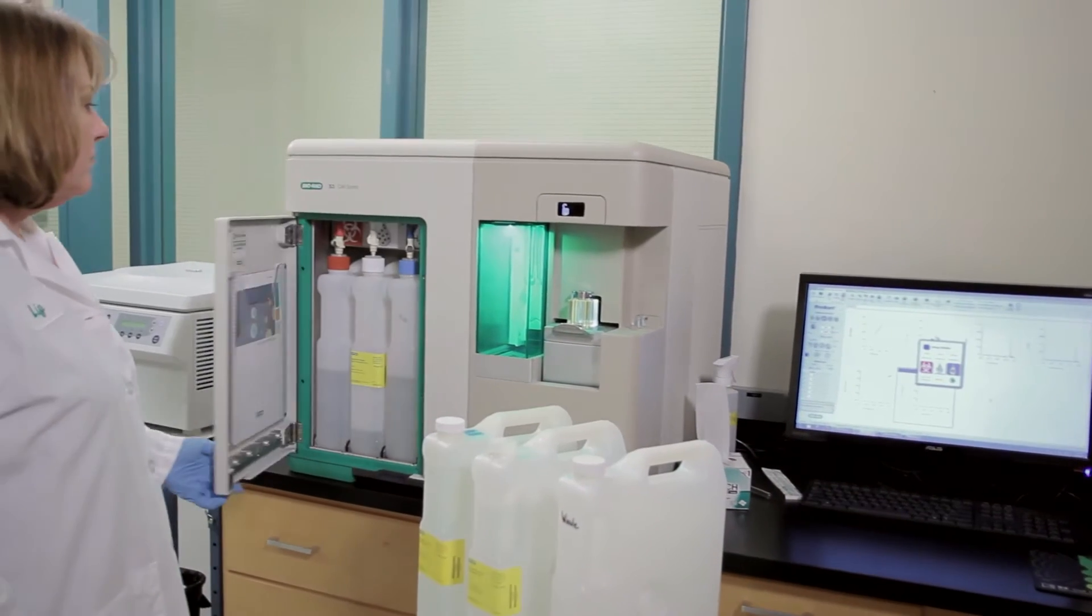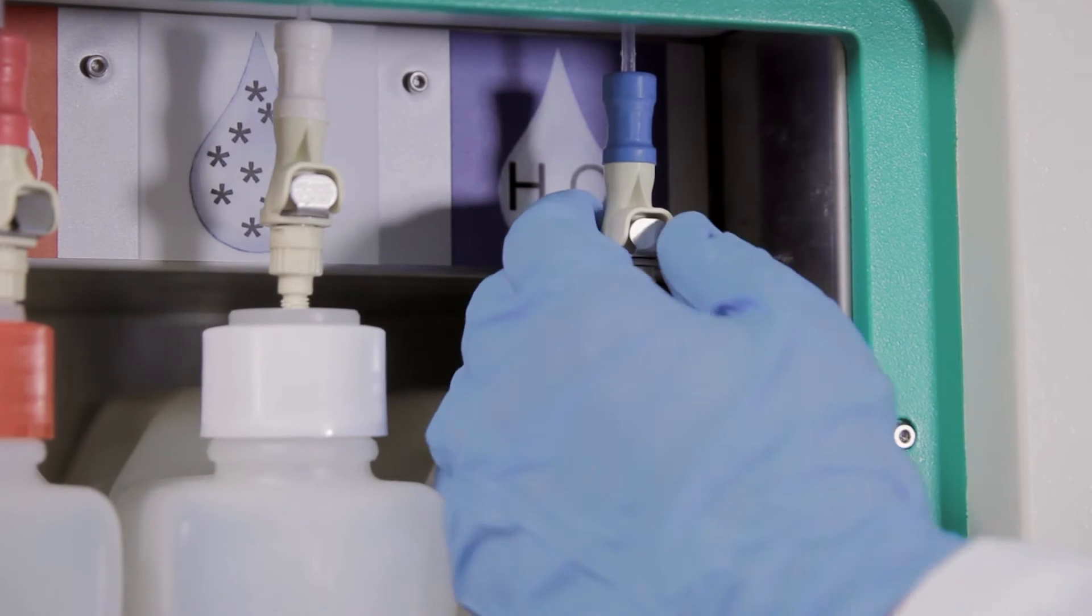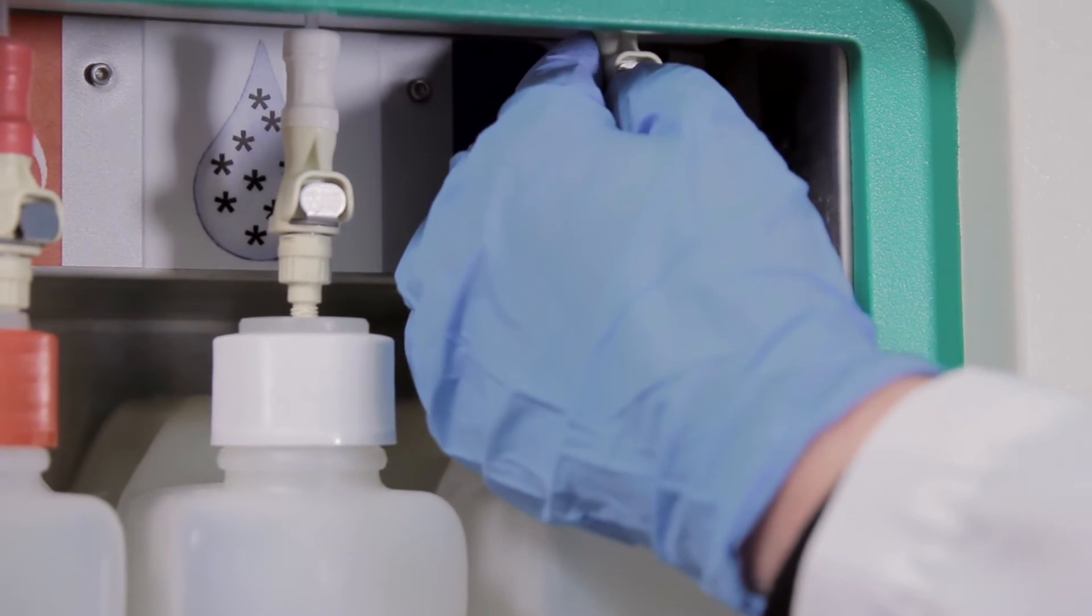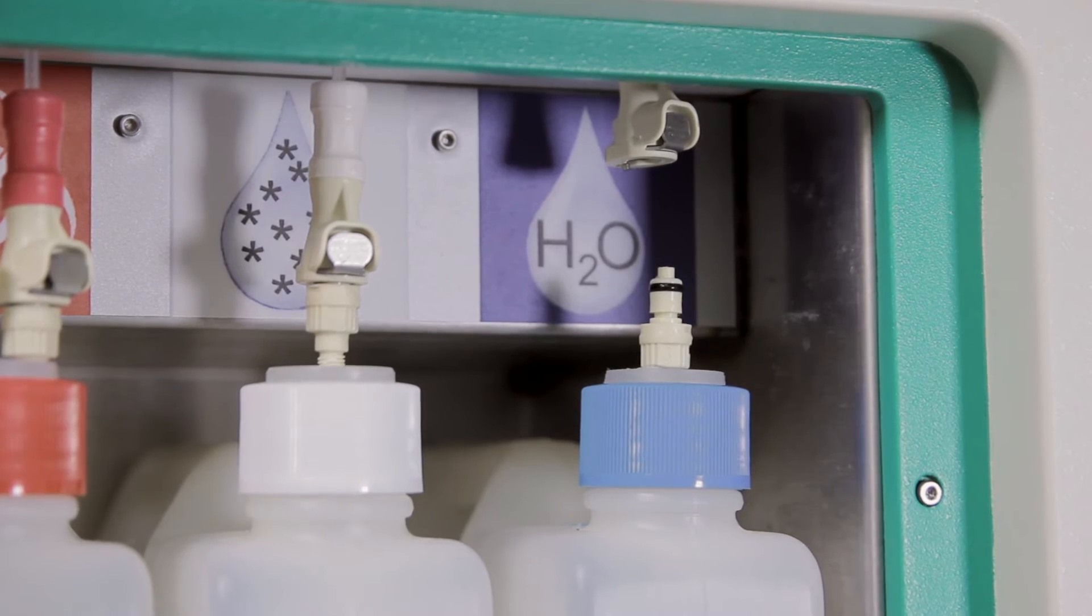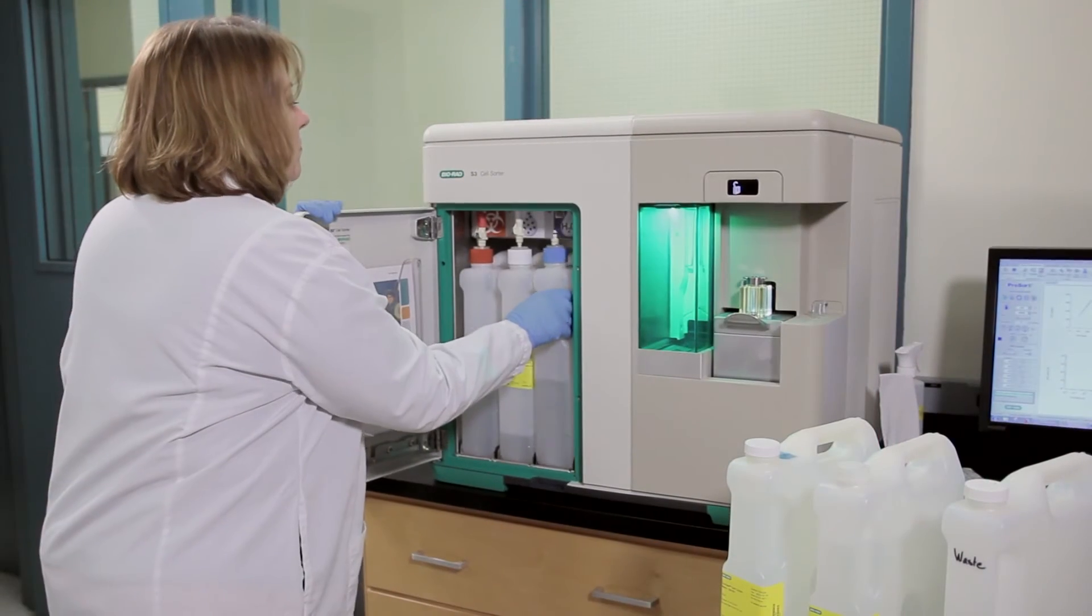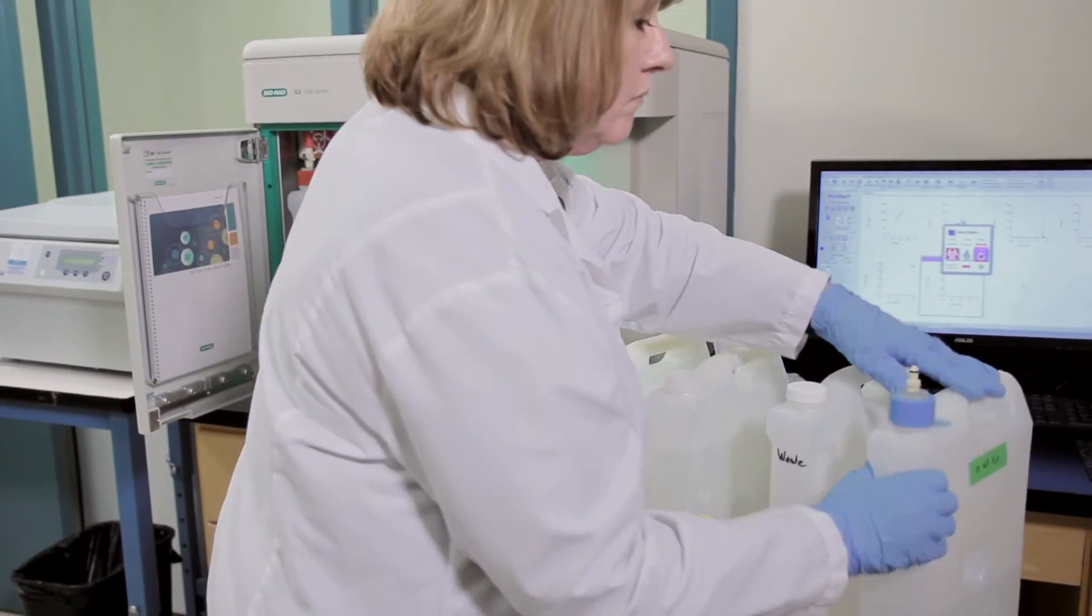Once your timer is running, open the fluidics door. Detach the quick disconnect from the cap assembly by pushing the metal button and then lift until it engages with the magnetic holder above the bottles. Gently lift up and pull out the empty container and remove the cap assembly.